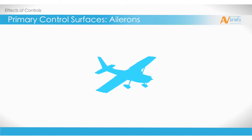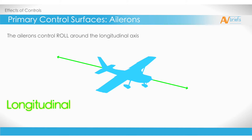The ailerons are incredibly important, as they allow us to bank the aircraft left and right and therefore turn. They control roll along the longitudinal axis. Let's examine how they do that.